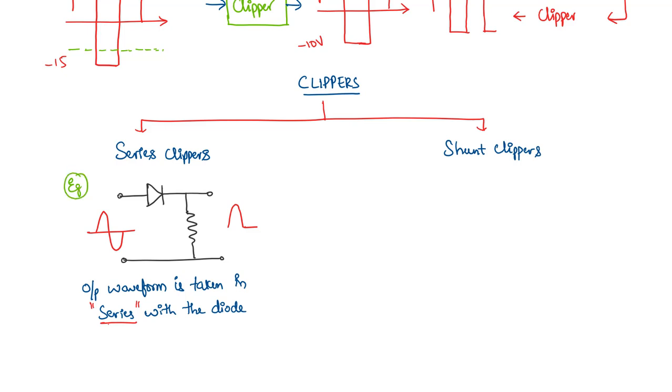Now coming to shunt clippers, we can just replace the positions of diode and resistor. We would have a circuit like this. When a sinusoid waveform is given at the input, we get a waveform like this.